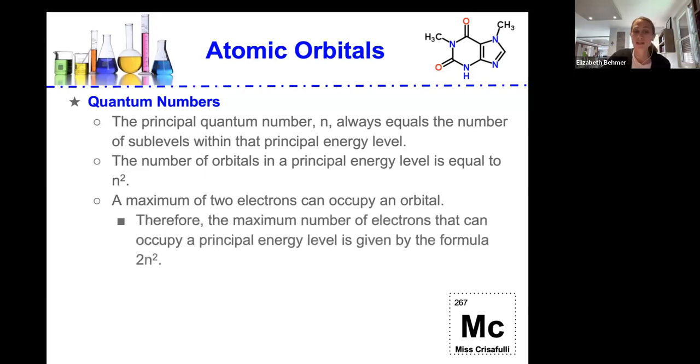Therefore, the maximum number of electrons that can occupy a principal energy level is given by this formula 2n-squared, where n is the energy level. And you can see that all in the previous slide's chart.